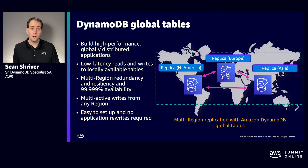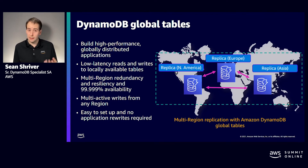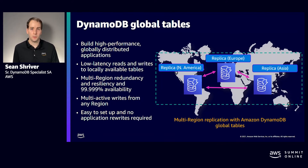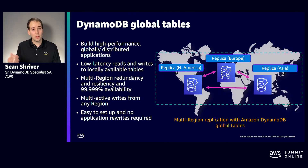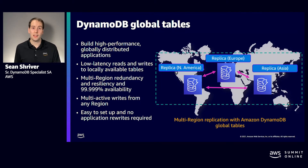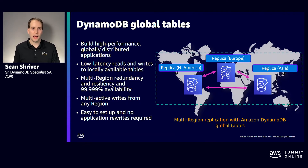DynamoDB is a regional service — you do not have to make any changes to your application to use Global Tables or replicate data into another region. Any region can write an item so long as your IAM policies allow that. This is where complexity enters the picture. It is one thing for DynamoDB to provide a replicated table, and another thing entirely for your application to write data in a way that avoids conflict. Remember, Global Tables ensures that an item reaches a consistent state worldwide.